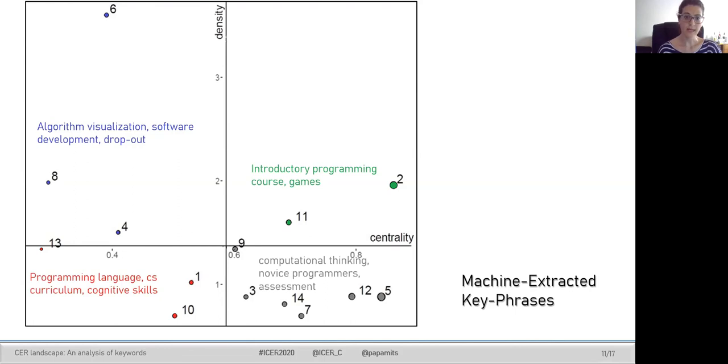A relatively high number of basic and transversal themes were detected, such as computational thinking, novice programmers, errors, and assessment, with the topics in cluster 9, which are related to computational thinking, being very close to quadrant 1.